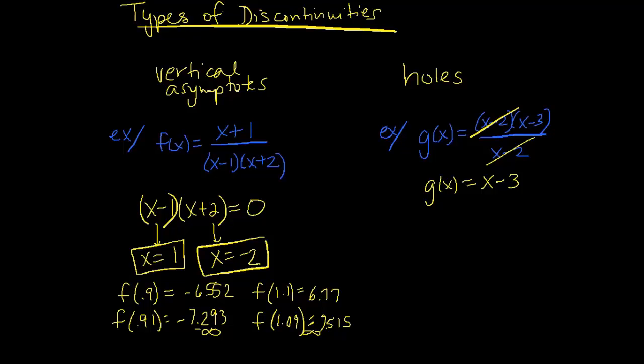G of x is now a linear function. So we'd get a line, and the y intercept is at negative 3, and has a slope of 1, looks something like this.